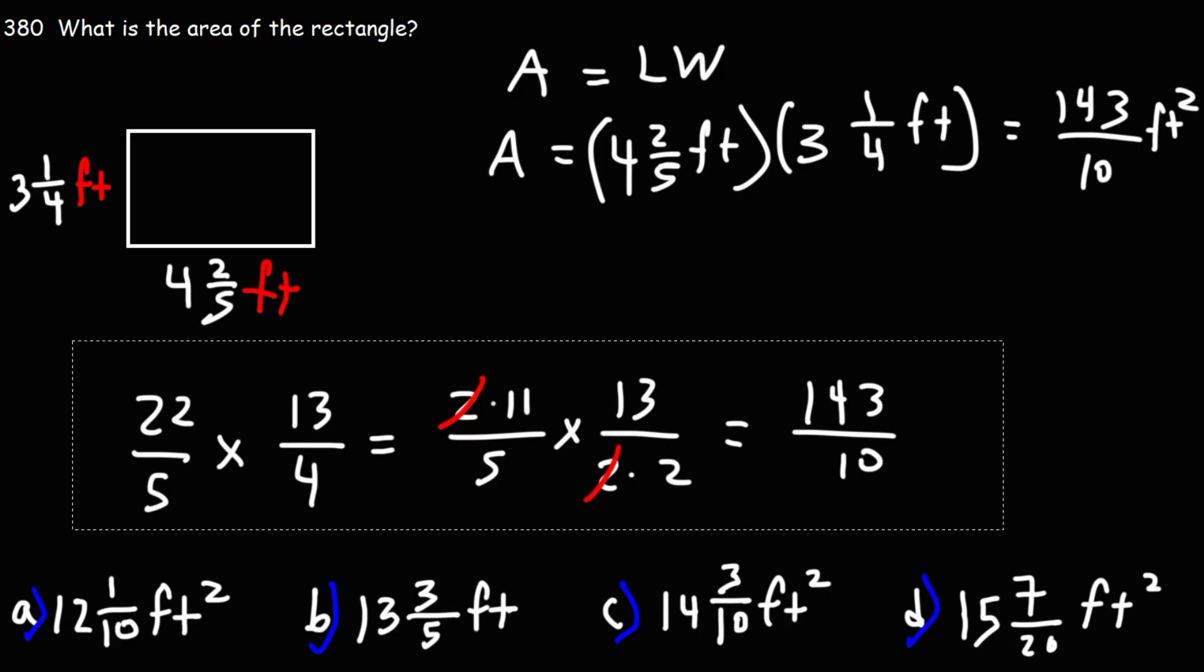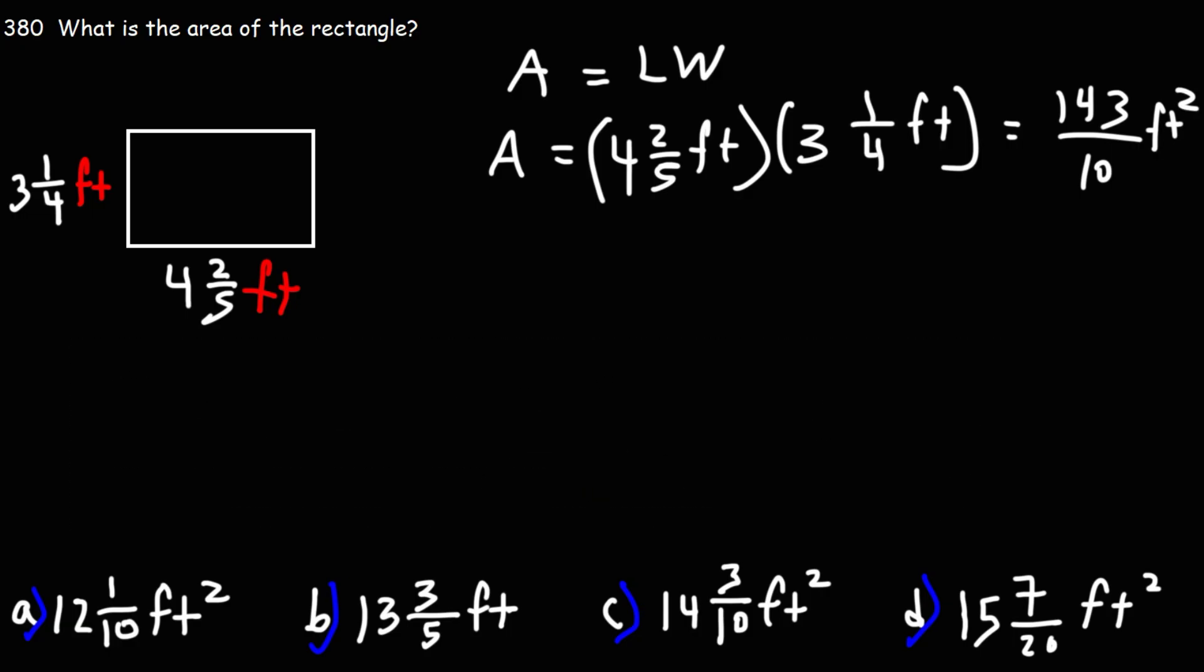Now we just need to convert the improper fraction into a mixed number. So 143 over 10. What is the highest multiple of 10 just under 143?